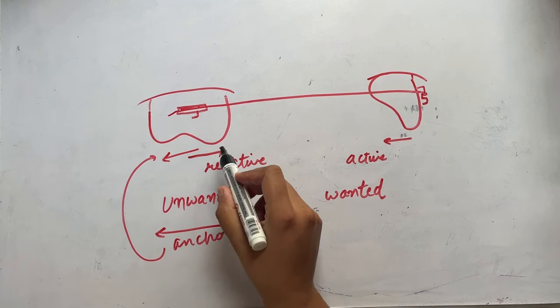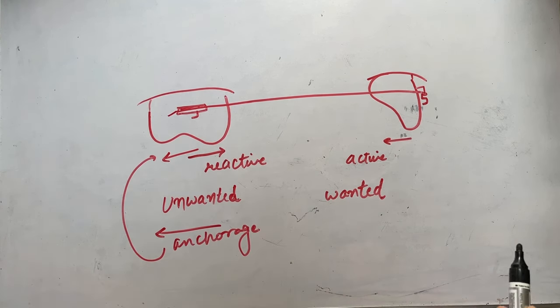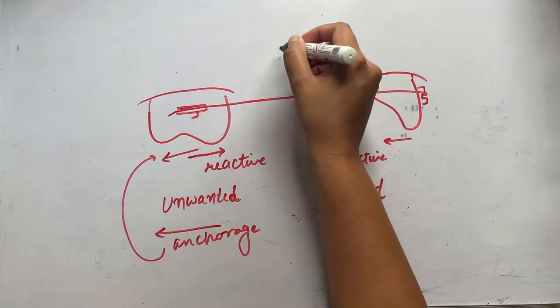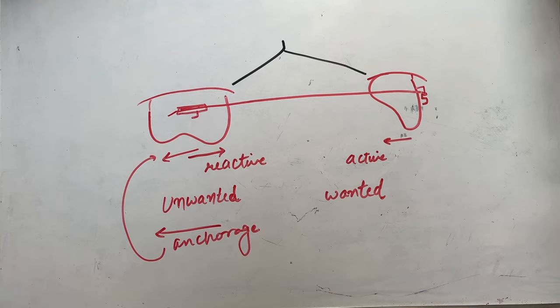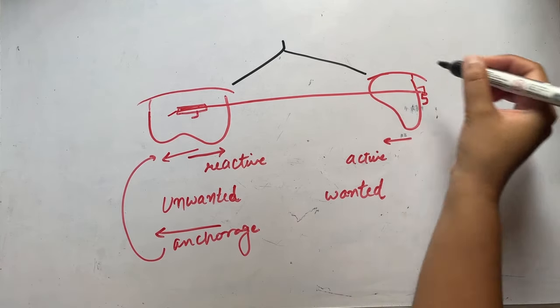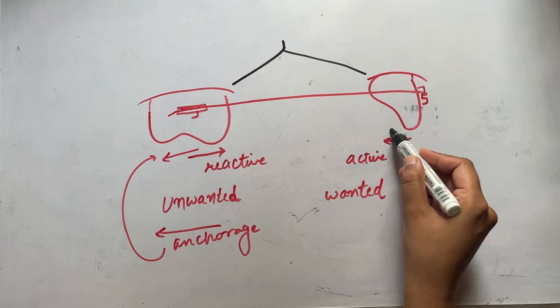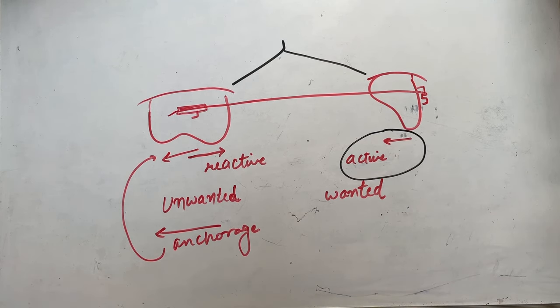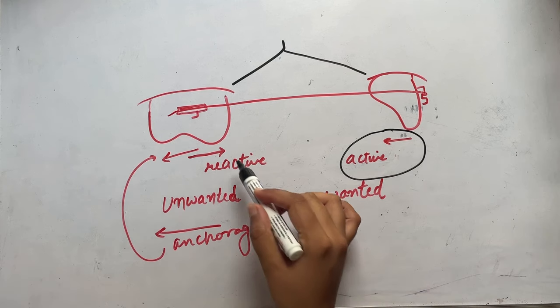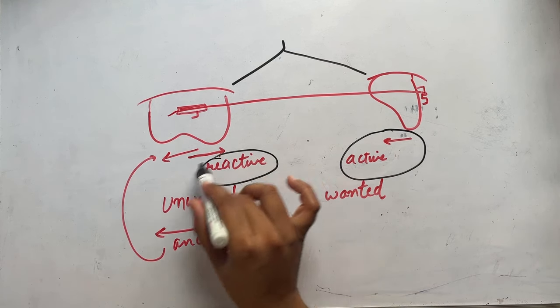Newton's third law states that every action has an equal and opposite reaction, an active member and a reactive member. For example, if we are trying to retract incisors, this will be our active member, while the anchor, the base which we will be using, is the reactive member.